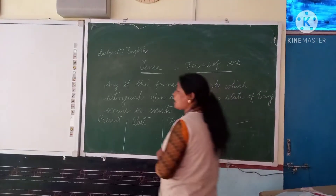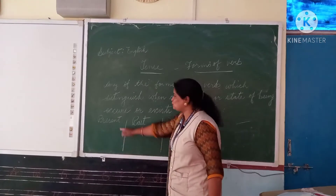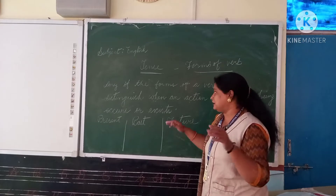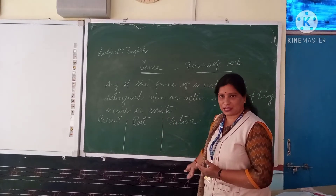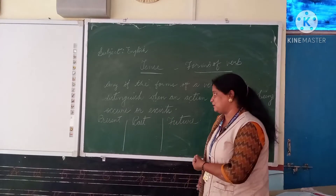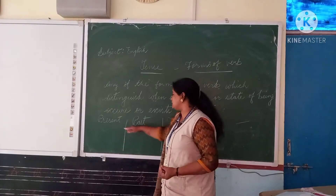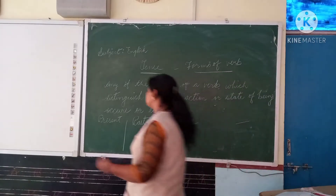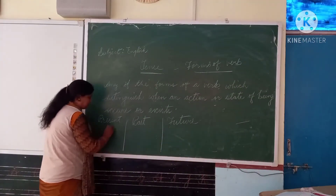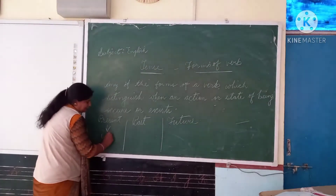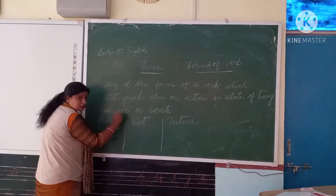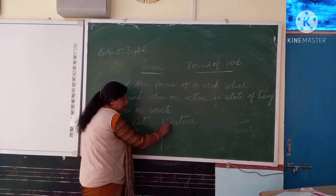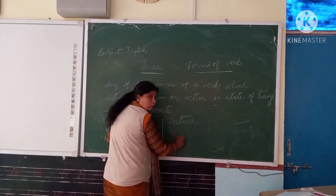We will discuss about one only, but just let me tell you what tenses are and how many types of tenses there are — just an introduction. There are three tenses, and afterwards each tense is divided into four parts. Present has four parts, past has four parts, and future also has four parts.